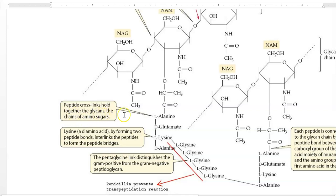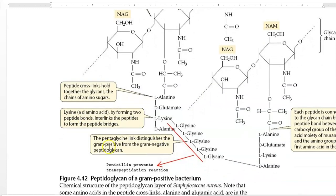Peptide cross-links hold the glycan chains together. The pentaglycine linkage is commonly found in gram positive bacteria. This pentaglycine-containing peptidoglycan can be hydrolyzed with the help of penicillin — the mechanism being that penicillin prevents the transpeptidation reaction taking place between the pentaglycine linkage.